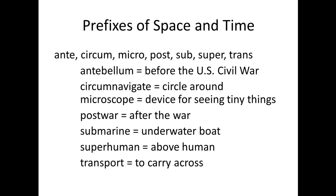There are also prefixes of space and time. Ante- with an E is a prefix that means coming before. Circum- means around. Then we have micro-, post-, sub-, super-, and trans-. Antebellum is a period before the war — in the United States, it means before the Civil War of the 1800s. To circumnavigate means to circle around something. A microscope is a device for seeing tiny things. Post-war means after the war. Submarine means underwater or beneath water. Superhuman means above human. Trans- means across — to carry across.